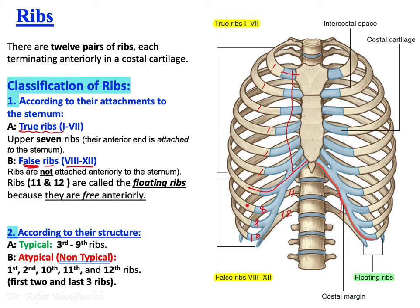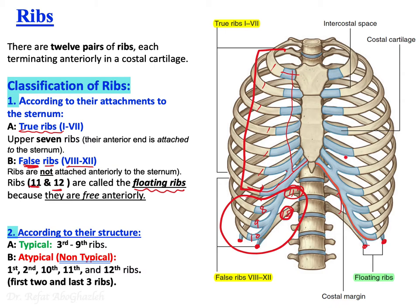False ribs can be further subdivided to include floating ribs — ribs 11 and 12. If you look at the tips of ribs 11 and 12, they are not attached to anything anteriorly, so they float in the chest wall. Ribs 8, 9, and 10 unite their costal cartilages together and then join the costal cartilage of rib 7, which attaches directly to the sternum.